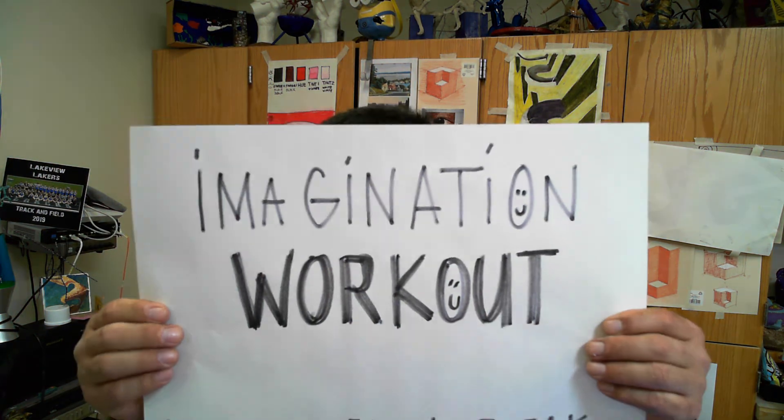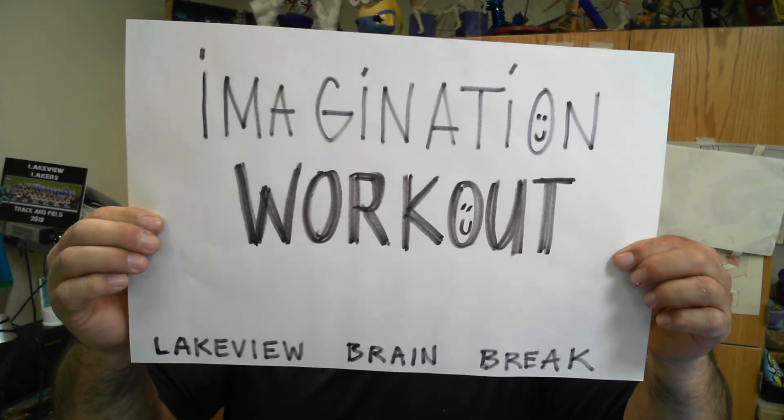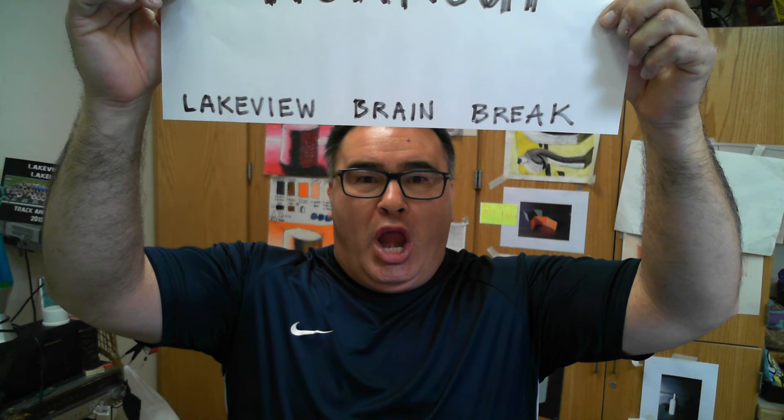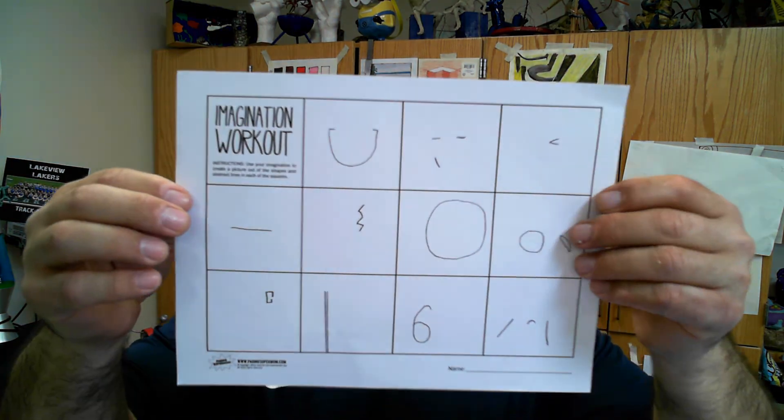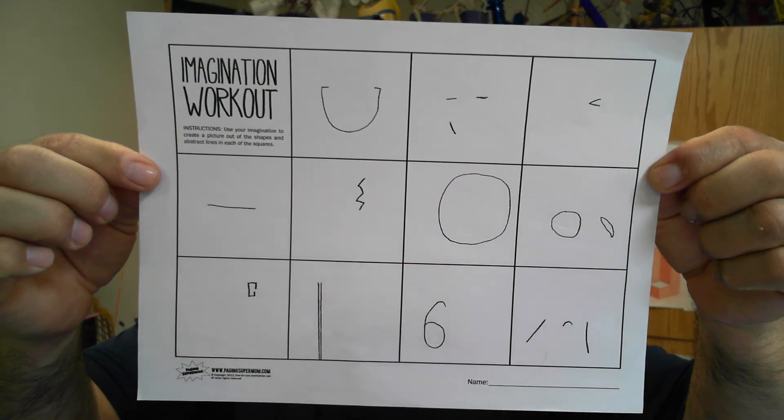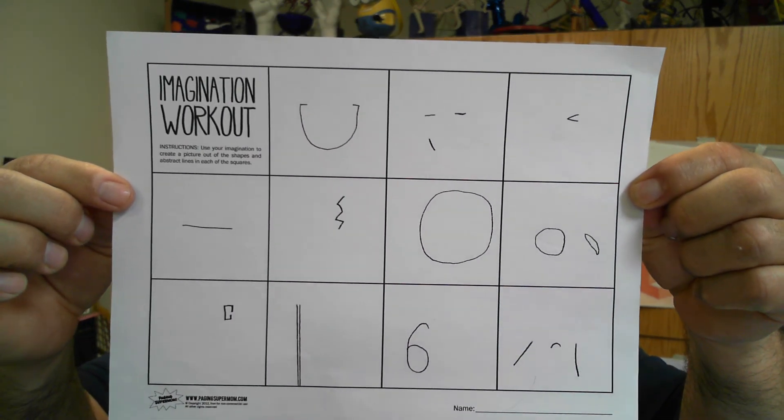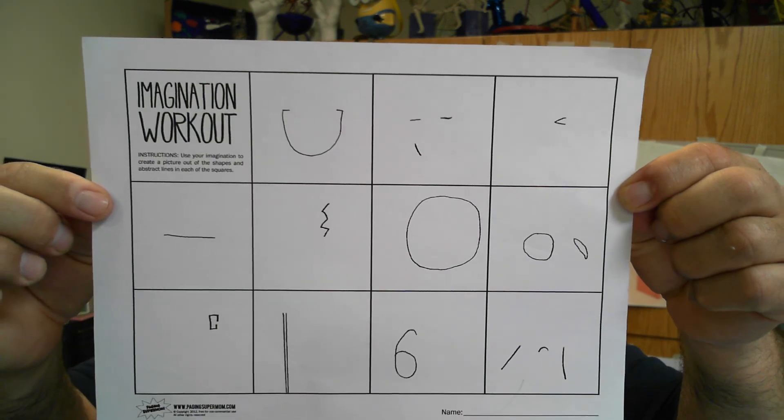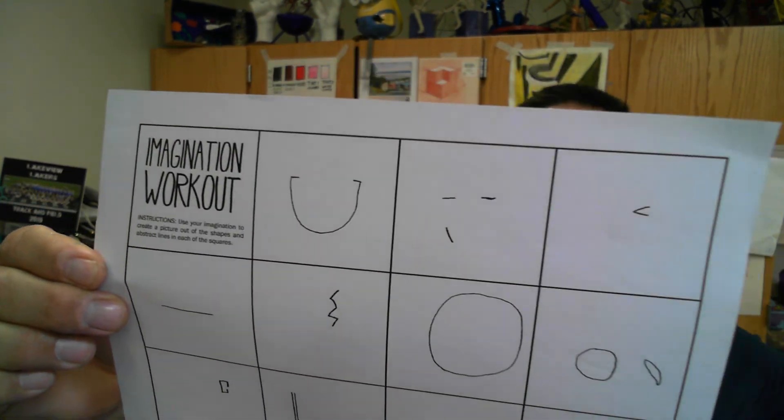We are going to do an imagination workout, as it is a part of the Lakeview Brain Break. What we're going to do is, you're going to need to make a photocopy, or you're going to want to take your camera on your phone and take a picture of this. This is what we're going to do. So, we're going to work from this and create different types of artwork.